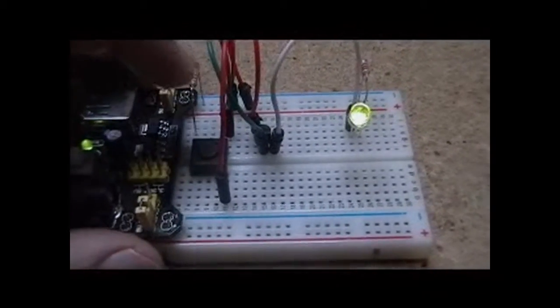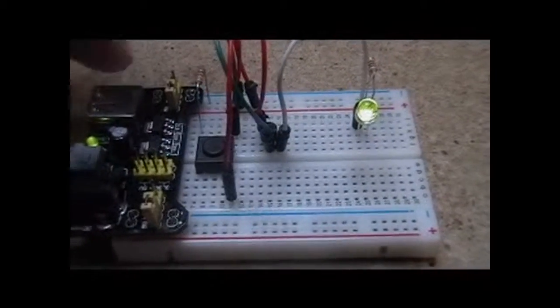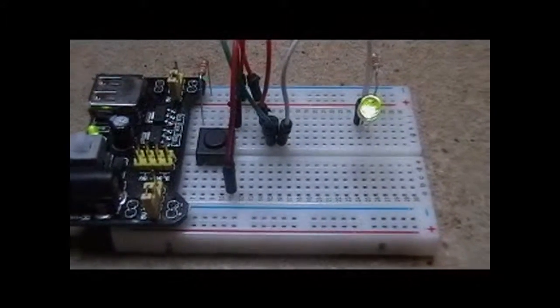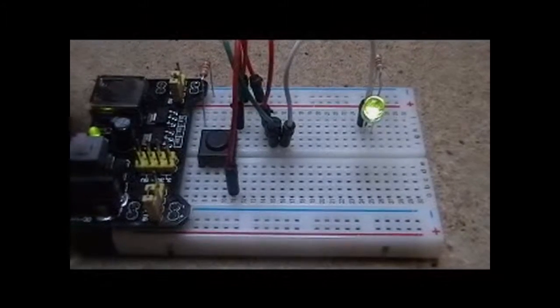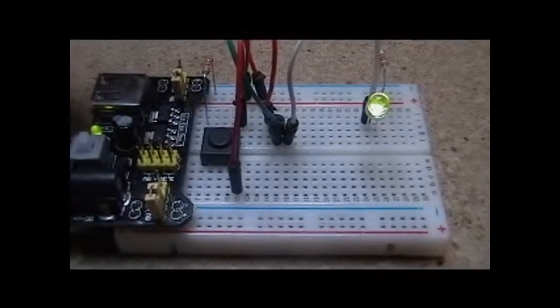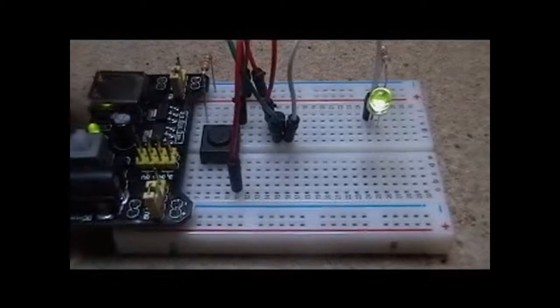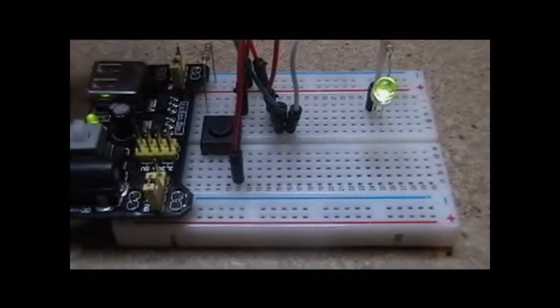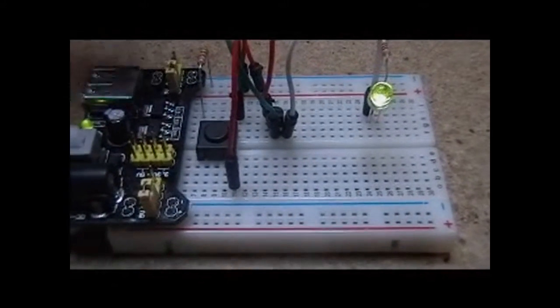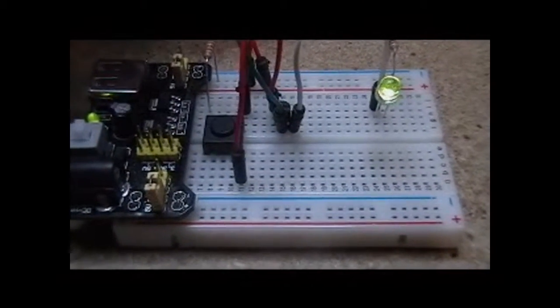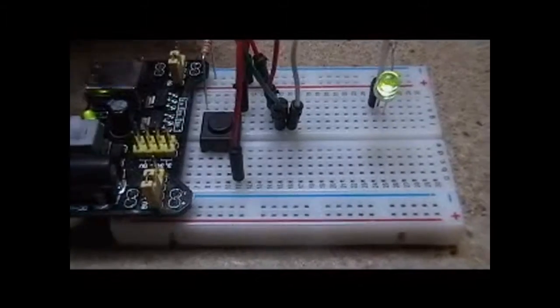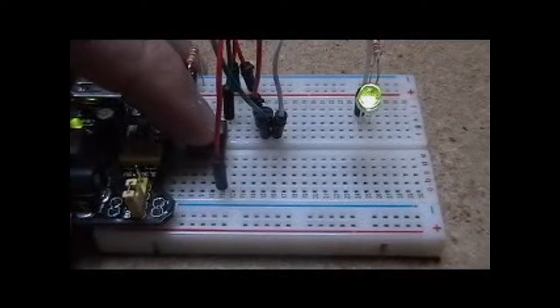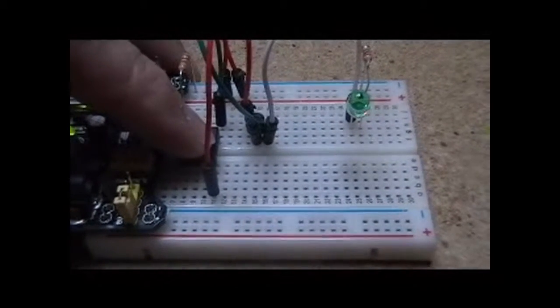As you can see here, I'm using a p-channel MOSFET in this particular case, and it has a ground or zero potential on the gate. In that case, the way I have the LED wired up, you have a one signal coming out. So a zero potential going in, a one coming out. If I press the button to change that potential to a positive potential, you'll notice the LED goes out.